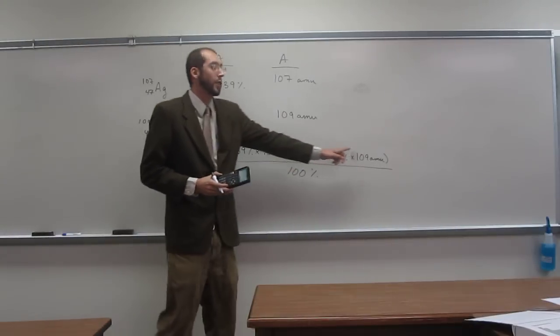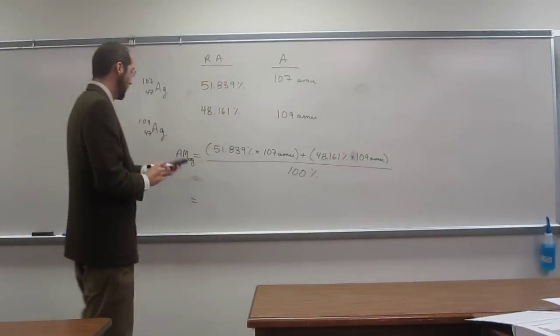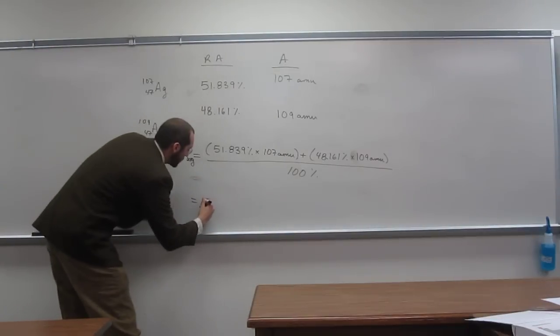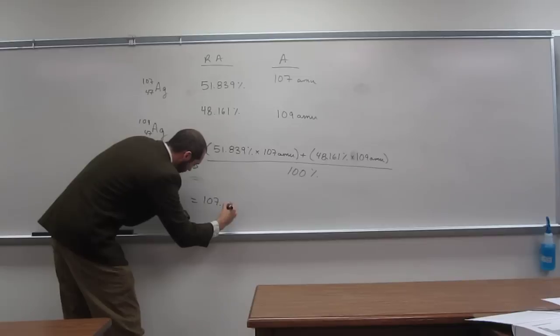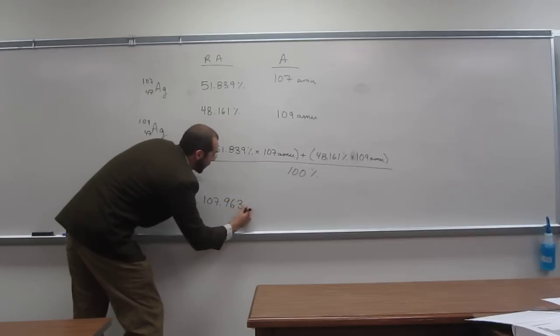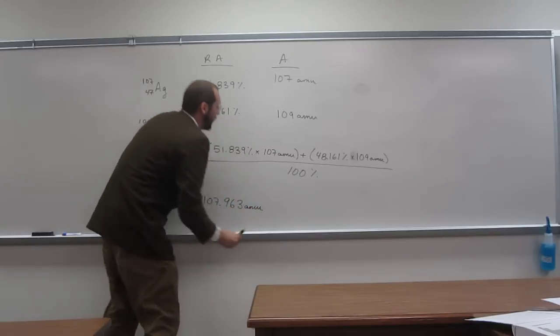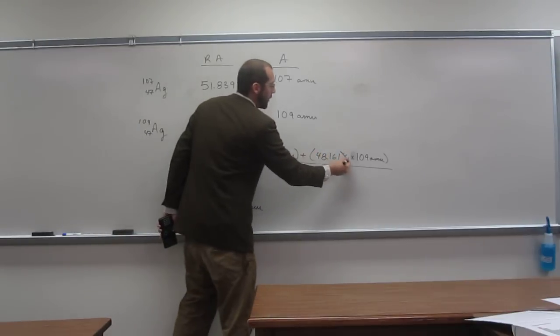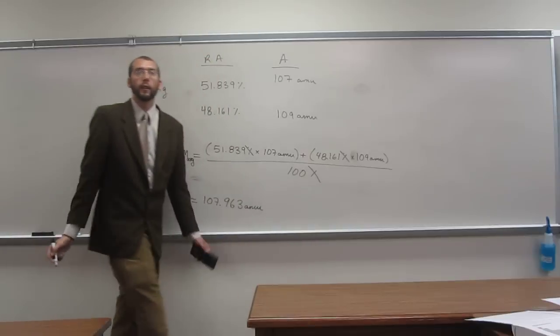Unfortunately, we can only go to three significant figures here. I'll write down what I have to five significant figures, and then we'll cut it down to three. So 107.963 amu. That's what my calculator gives me. Because why? Because percentages are going to cancel, but amu's are not going to cancel.